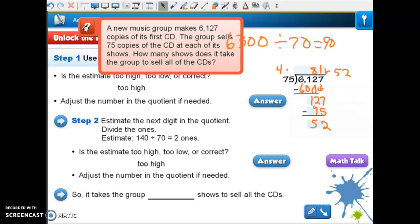80? 82. 82, why not 81? Because they have to sell the extra 52s. They still have to sell the 52. So at 81 of their shows they're going to sell 75, and then at that last show they'll have 52 left to sell.